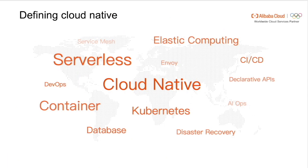In 2015, the Cloud Native Computing Foundation, CNCF, was founded. CNCF defined the four characteristics of Cloud Native architectures: containerized, automated management, and microservices. In 2018, CNCF updated the definition of Cloud Native architecture with two new features: Service Mesh and Declarative APIs.